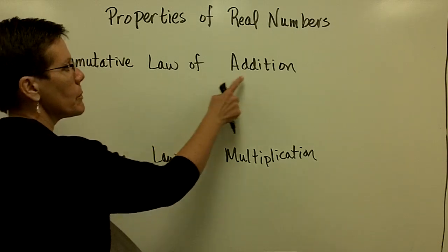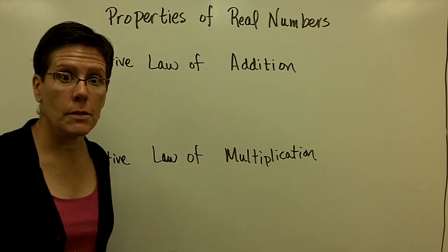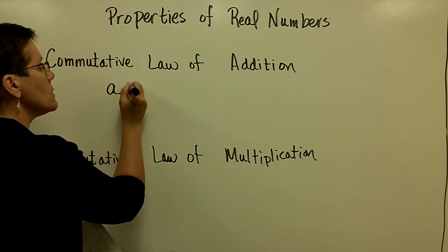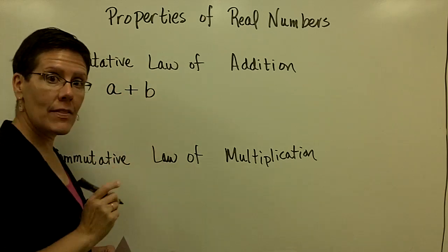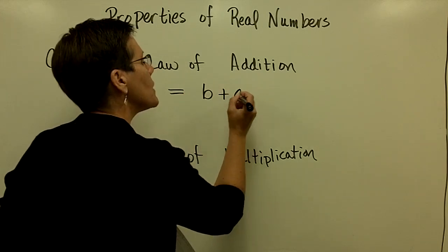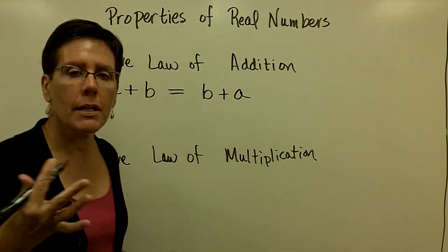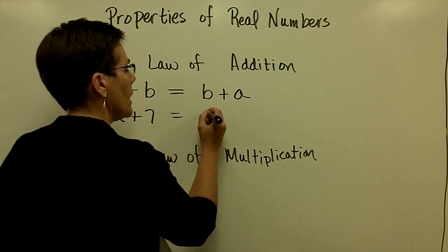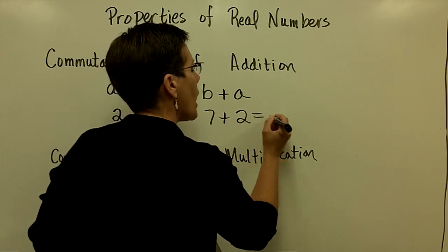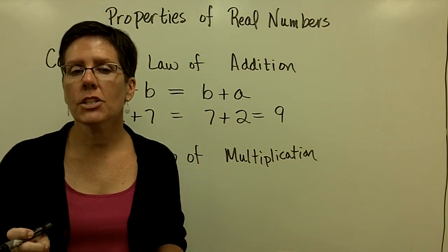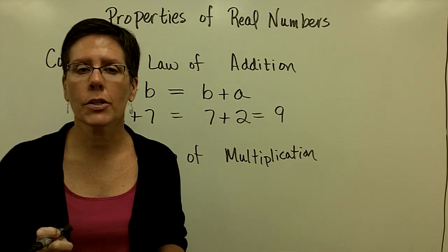The commutative laws work for both addition and for multiplication, and all they mean for addition is that you can take two things and add them together in any order. A plus B, B plus A, you get the same results. For example, 2 plus 7 and 7 plus 2 are both equal to 9. It's the commutative law of addition, and I can add in any order.